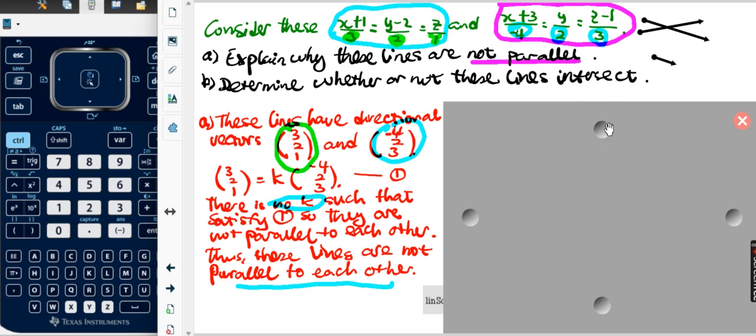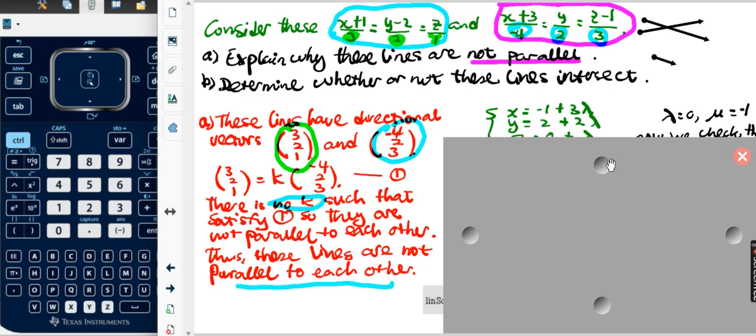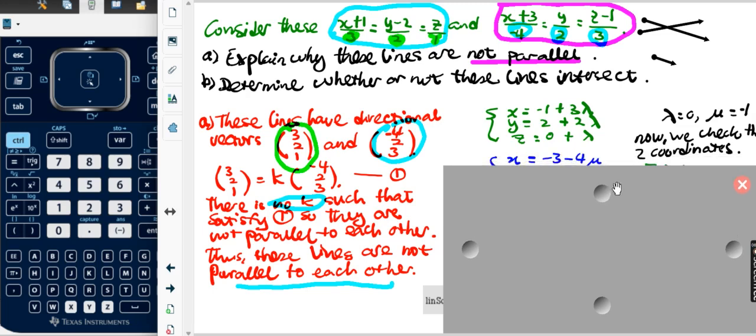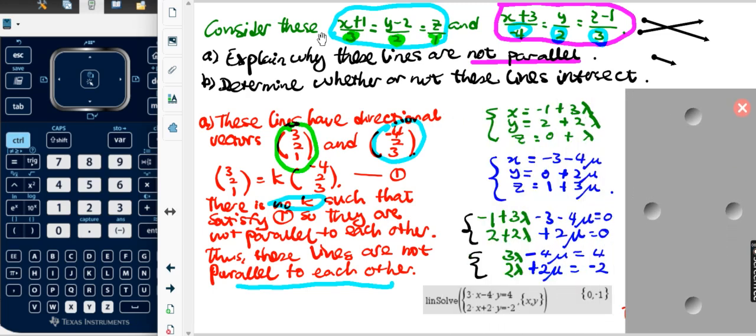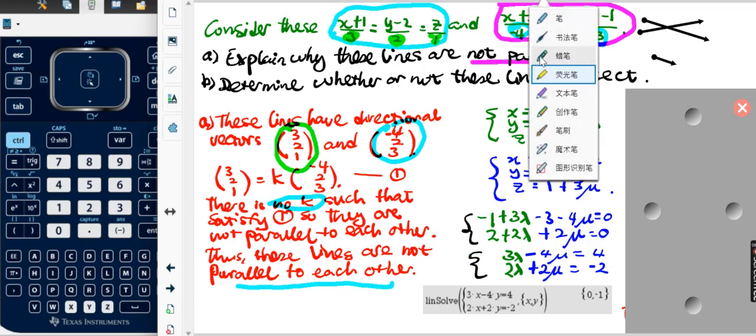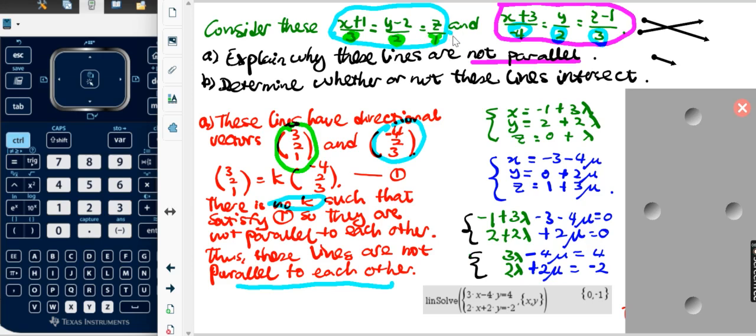To determine this, we first assume there are intersections—proof by contradiction. The one in green is this set, the blue is here. Change them to parametric equations. I use lambda for the first set and mu for the second set.